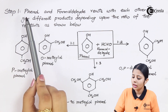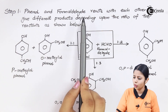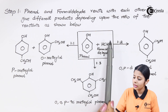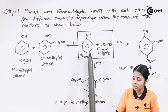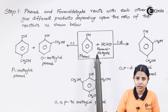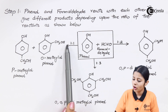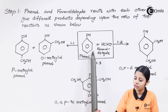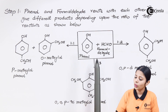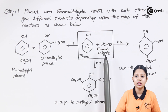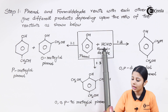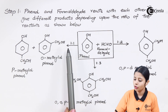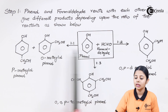In step one, phenol and formaldehyde are the reactants — also known as monomers — and they react with each other to give different products depending on the ratio. Phenol is a benzene ring with an OH group, and formaldehyde is the very first aldehyde (HCHO). If both reactants are taken in the proportion of 1:1, we get two products: P-methylol phenol and O-methylol phenol. The benzene ring has three spots — ortho, meta, and para — and the ortho and para spots are extremely stable, whereas meta is very unstable.